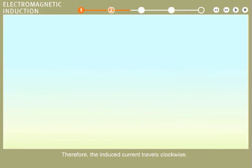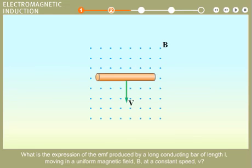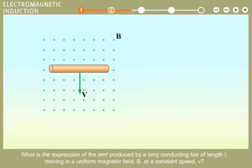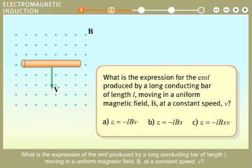What is the expression of the EMF produced by a long conducting bar of length L moving in a uniform magnetic field B at a constant speed V?